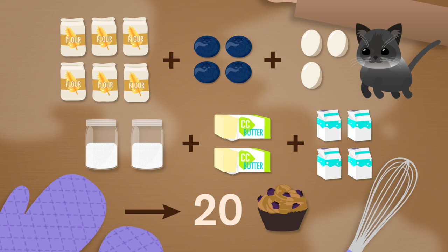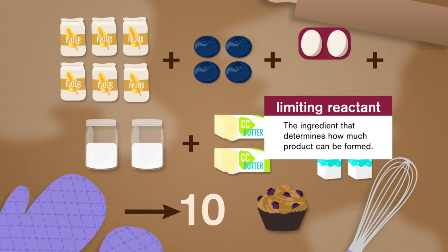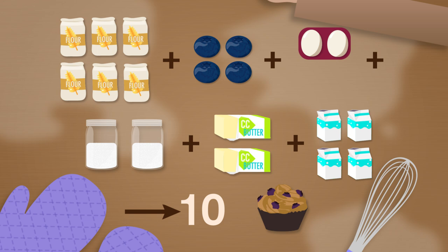Eggs would then become our limiting reactant, the ingredient that determines how much product can be formed. In other words, this is the reactant that will get used up first in the reaction. And once it's gone, we can't make any more muffins.